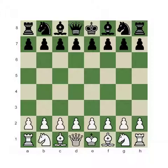I want to show you as an example of really great planning a classical chess game played by Alexander Alekhine, one of the most important and great names in the history of chess, against his opponent the Hungarian chess master Estálos.